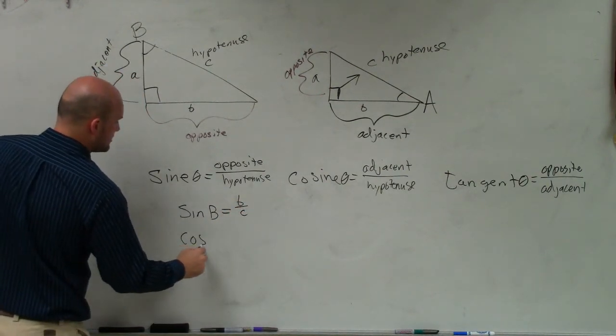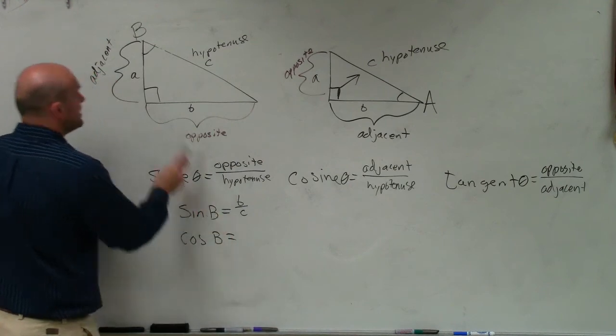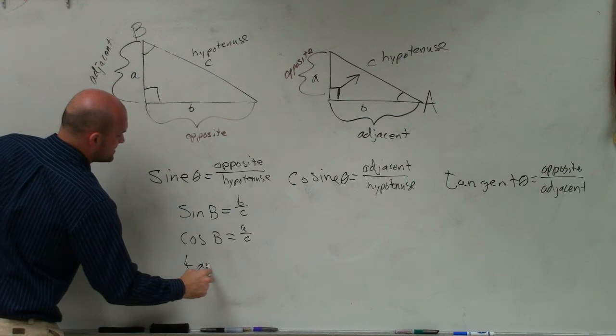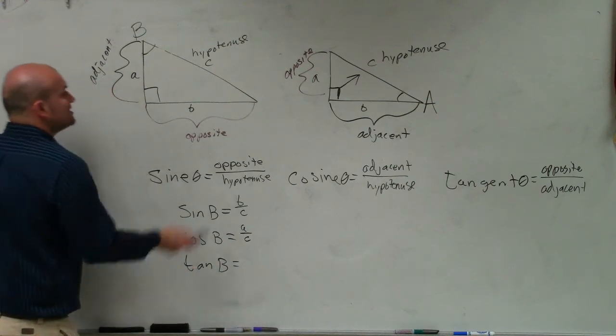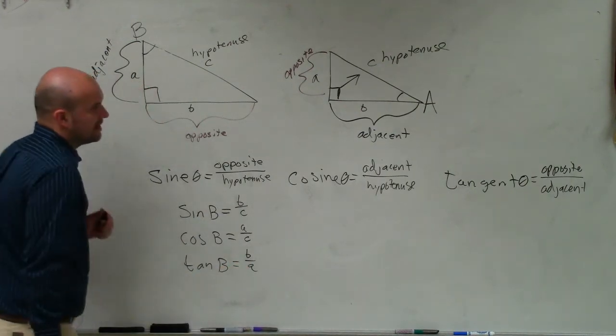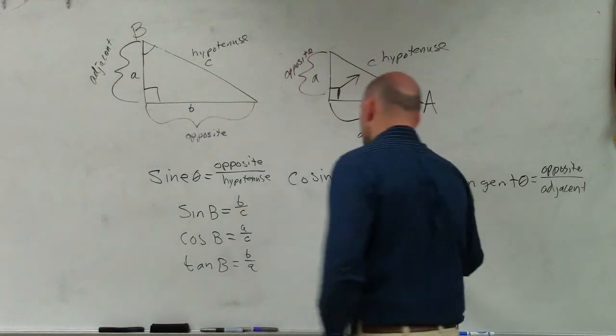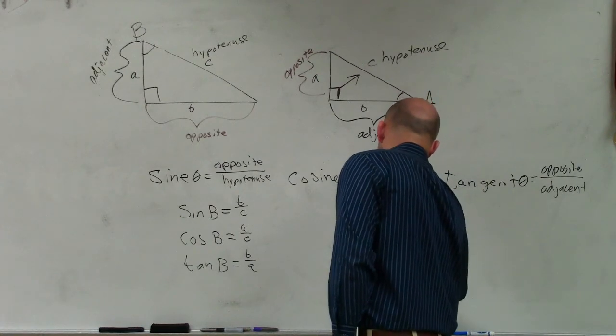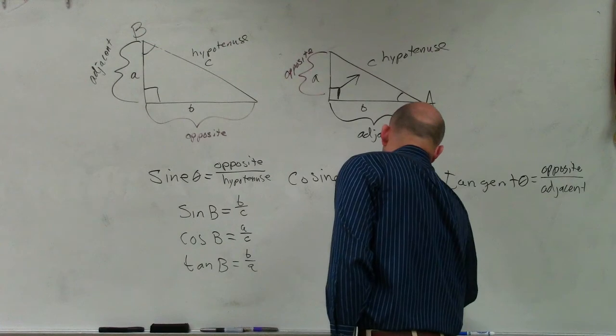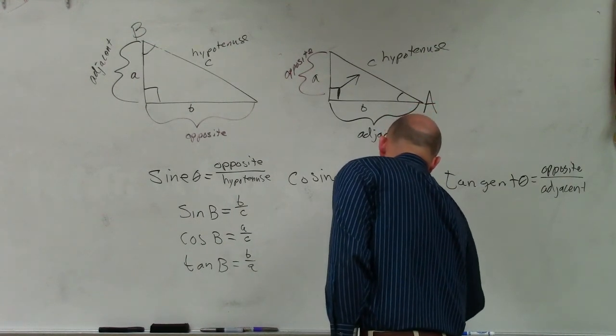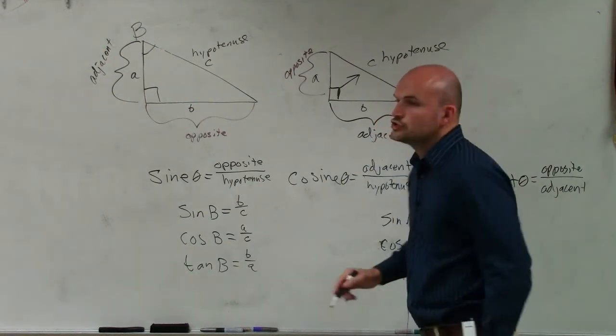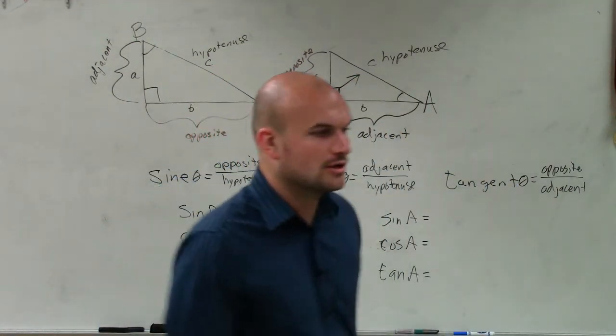I'll finish off the rest of these. Cosine of B is your adjacent side, which is A over C. And the tangent of B is your opposite over your adjacent, which is B over A. OK? So now, let's do sine of A, cosine of A, and tangent of A. So why don't you guys spend two seconds and see if you can figure those out on your own.